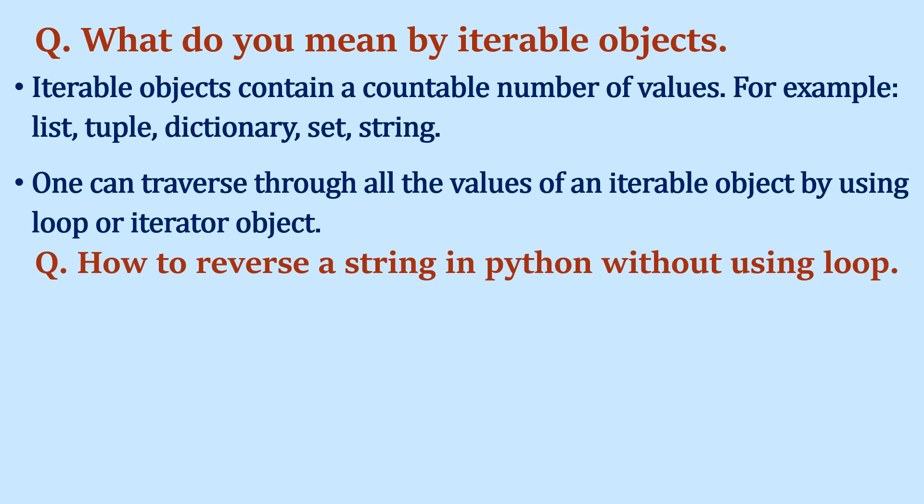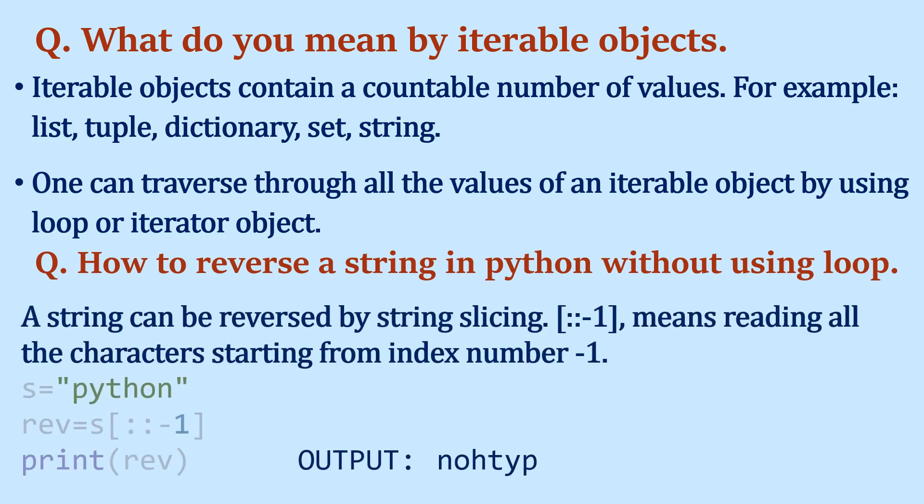How do you reverse a string in Python without using a loop? You can reverse a string using string slicing. Within square brackets, write [: :-1]. Since -1 indicates the index of the last character, this reads the characters from index -1 back to index 0, effectively reversing the string. The output will be the reversed string, as shown in the example.